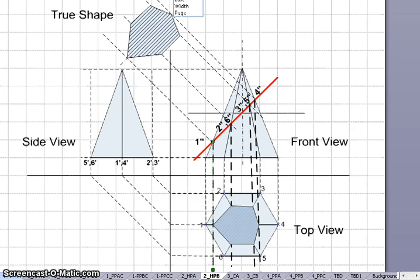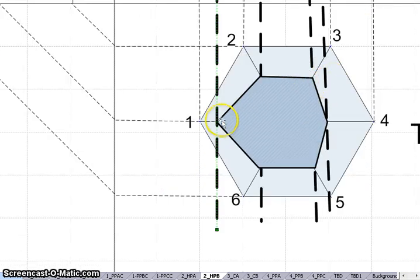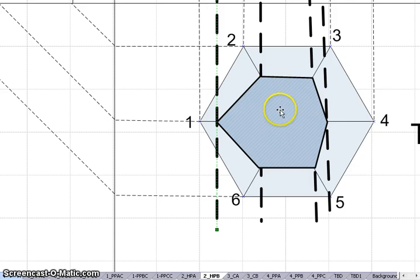So if I zoom in here, then once you have this point, one, this one here, one, two, three, four, five and six and then you just connect these lines and this will give you the top view.